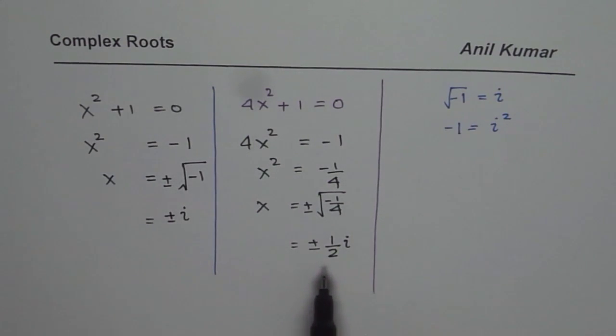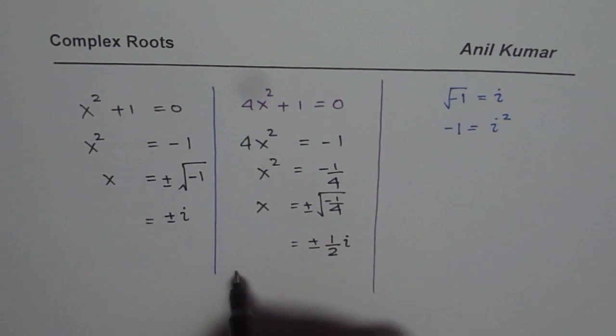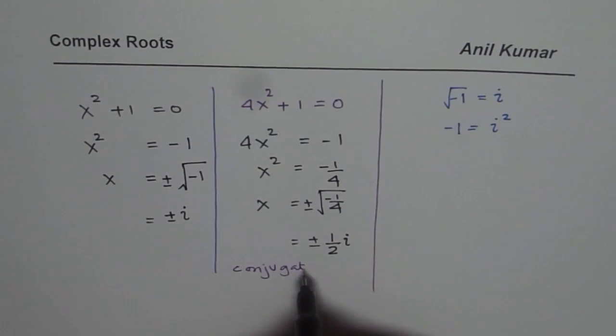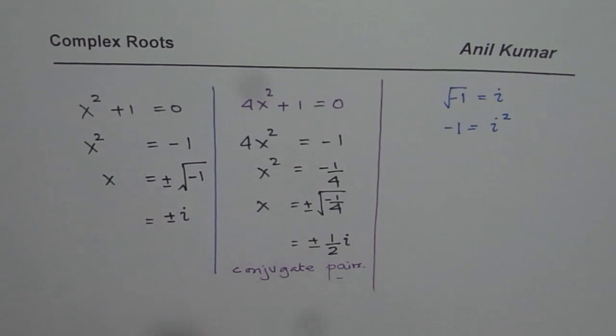So now, as you can see, all these, whenever we have complex roots, these are called the complex roots, they will be in pairs, and we call them conjugate pairs. So they will always exist in conjugate pairs, as we saw in this particular case.